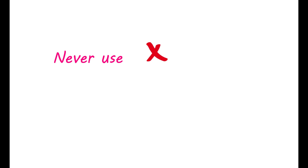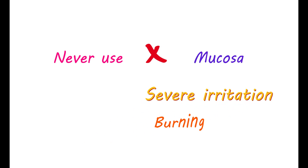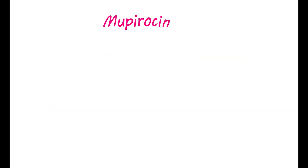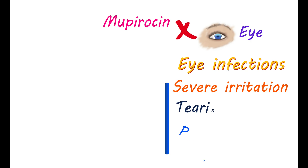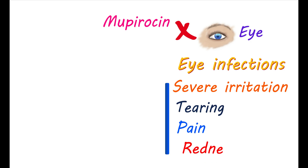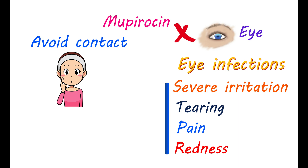What to avoid: Never use Mupiracin to apply to your mucosa, as it can cause severe irritation, burning, and dryness in mucosal layers. However, you can use it for nasal mucosa. Mupiracin ointment is not intended for use in the eye. Therefore, never use it for treating eye infections. It can cause severe irritation, tearing, pain, and redness of the eye if it is applied. Try to avoid contact with the eye.